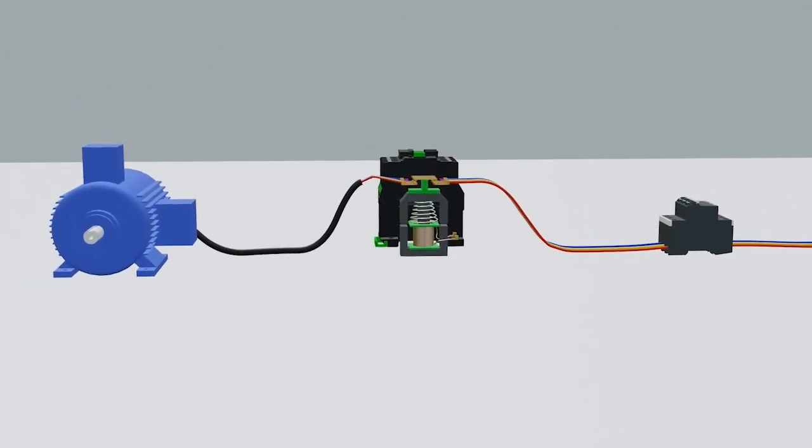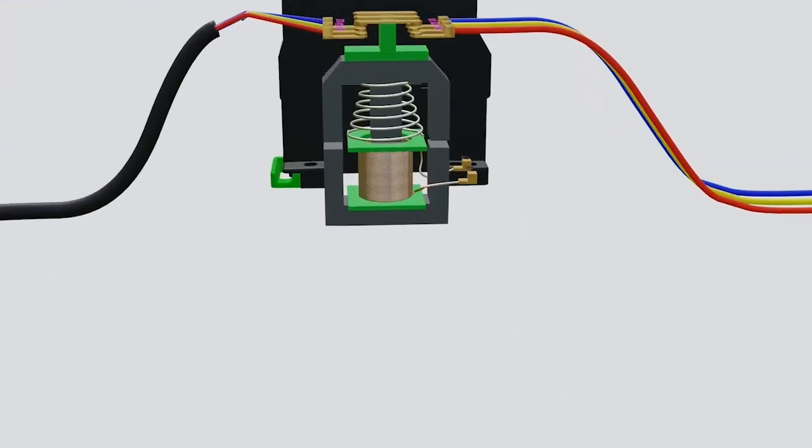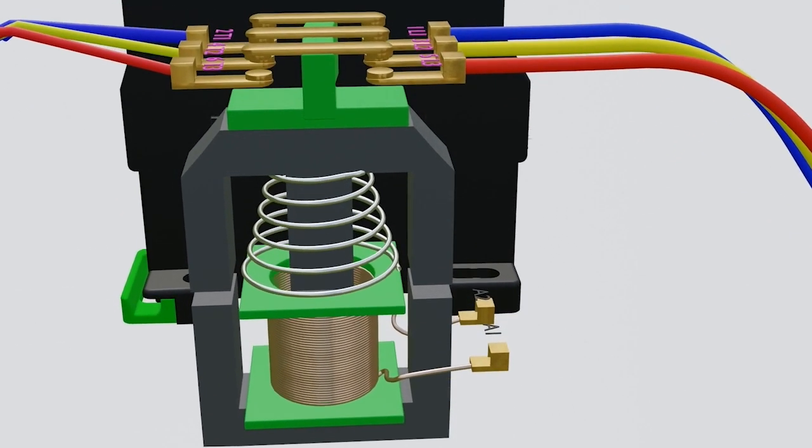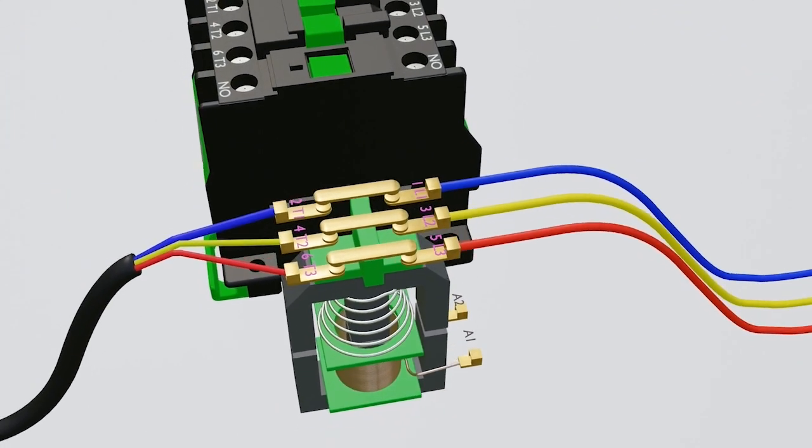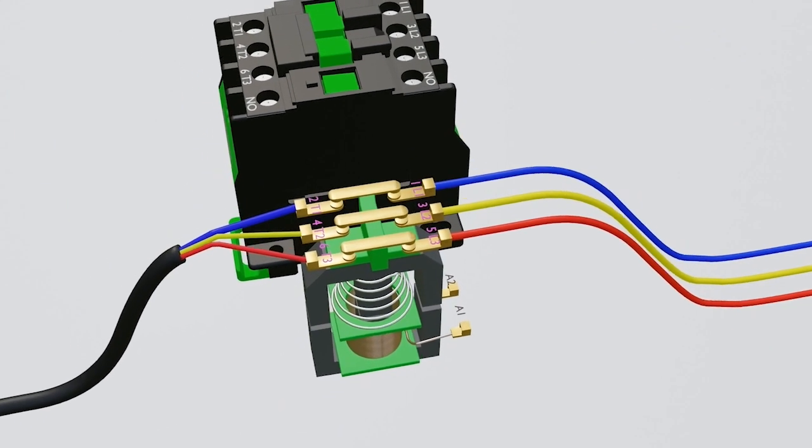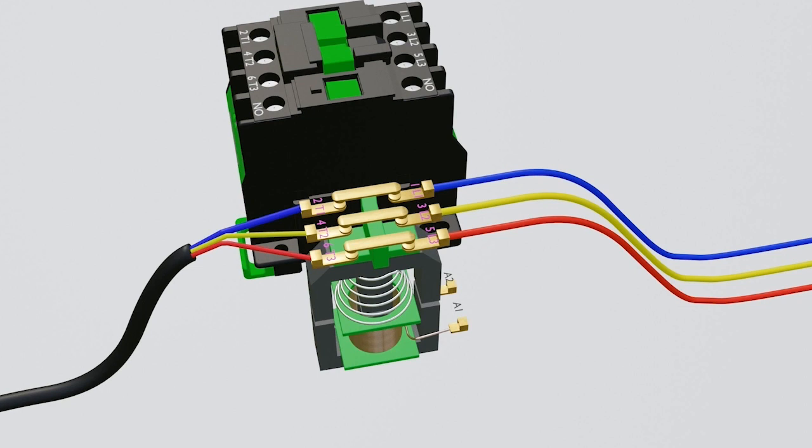In this example, we have a motor as a load. As you see here, these A1 and A2 terminals are contactor coil terminals, so they are used to control the contactor. If we want to pick up and drop the contactor, we will do it with help of these A1 and A2 terminals.